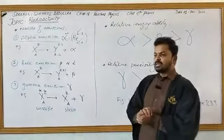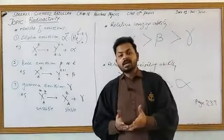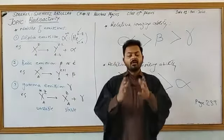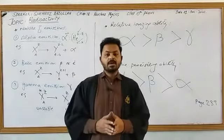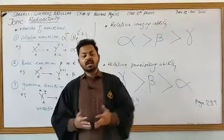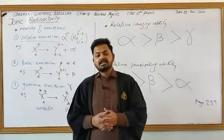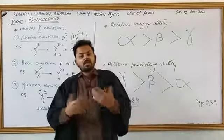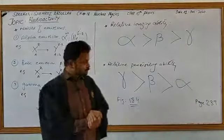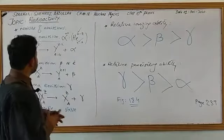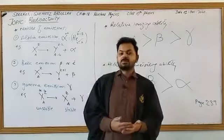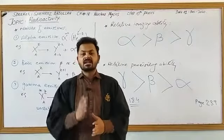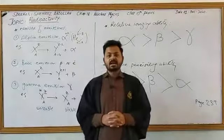To summarize today's lecture: we discussed radioactivity and its definition, natural and artificial radioactive elements, the behavior of a radioactive sample placed in electric and magnetic fields, the nature of alpha, beta, and gamma emissions, and finally the relative ionizing ability and penetrating ability of alpha, beta, and gamma.